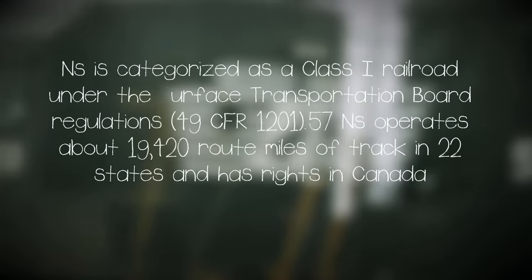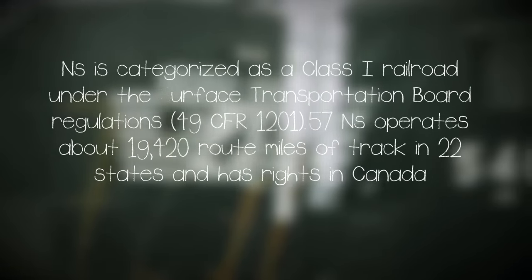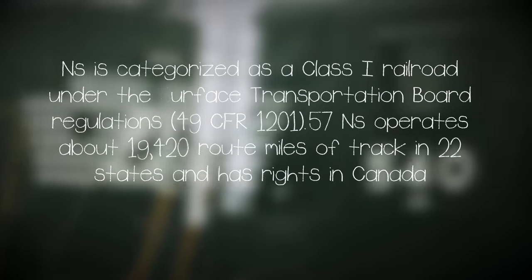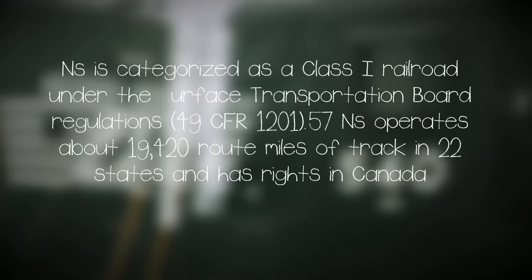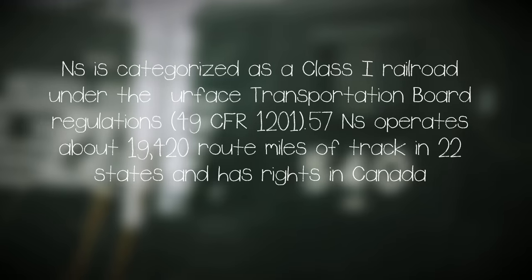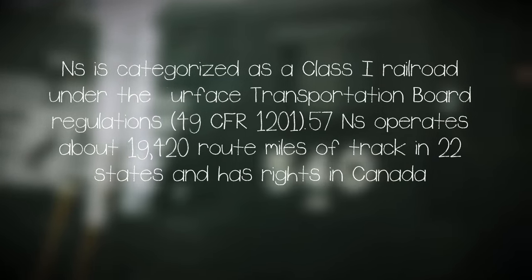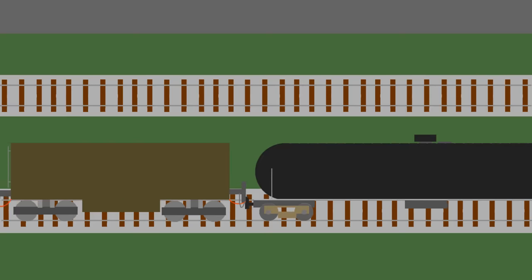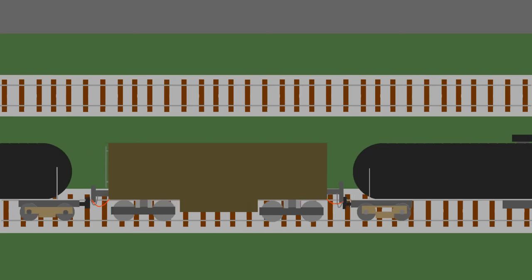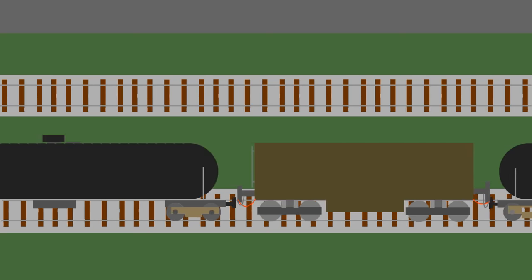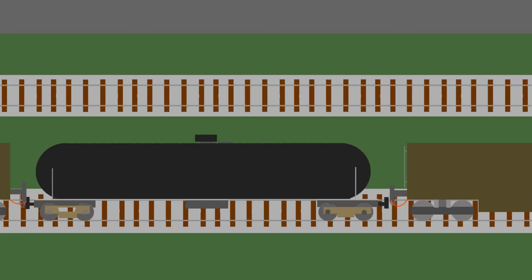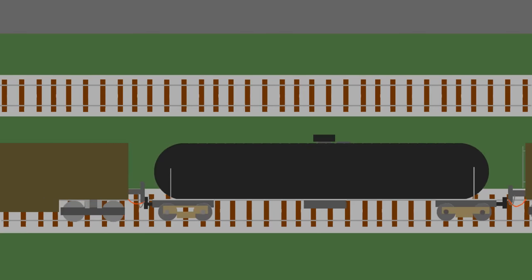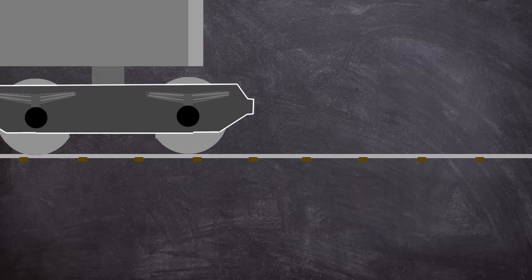Norfolk Southern is a massive freight operator as said by the NTSB in their final report. NS is categorized as a class 1 railroad. NS operates about 19,420 miles of track in 22 states and has rights in Canada. So not a small time operation by any stretch. As the operator works in freight, often trains are made up of mixed cargo in various different types of rail car.